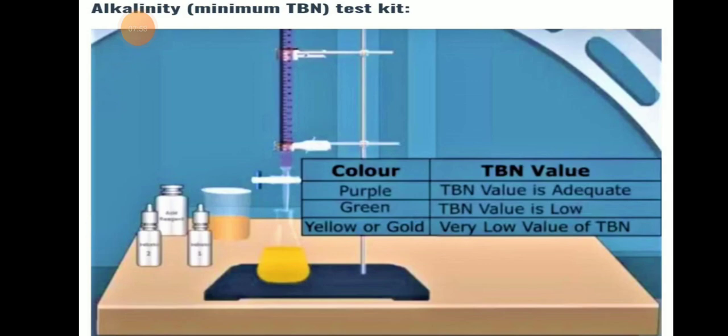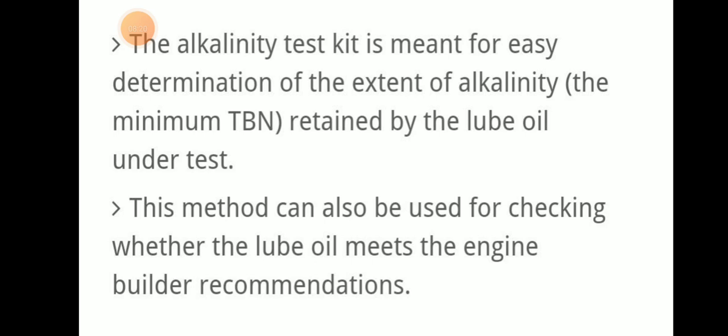For the alkalinity or Total Base Number test, a colour comparator is used. Purple colour means the TBN value is adequate; green means the TBN value is low; and yellow or gold means the TBN value is very low. This alkalinity test is meant for easy determination of the extent of alkalinity retained by the lube oil and can also be used to check whether the lube oil meets the engine builder's recommended condition.